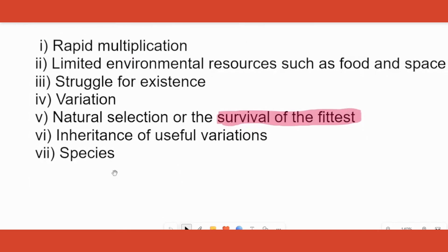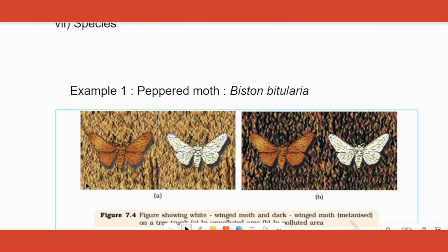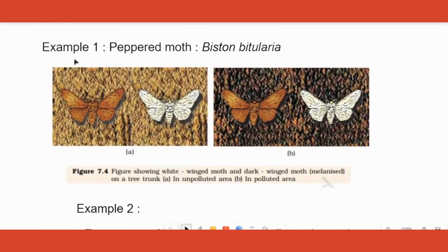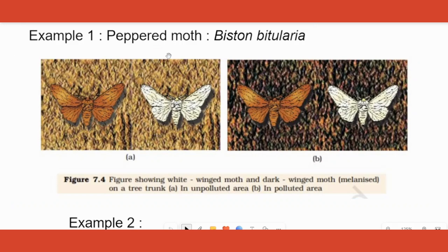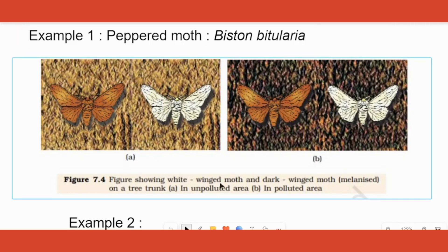Now let's look at examples of natural selection. The first example is the peppered moth, or Biston betularia, which is given in the textbook. There are two varieties: one with white wings and one with dark wings. Before the industrial revolution, more white-winged moths were seen because tree trunks were paler, allowing white moths to hide from predators. The dark ones were more easily spotted and picked off.